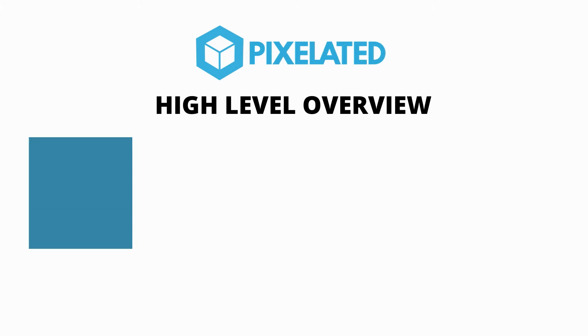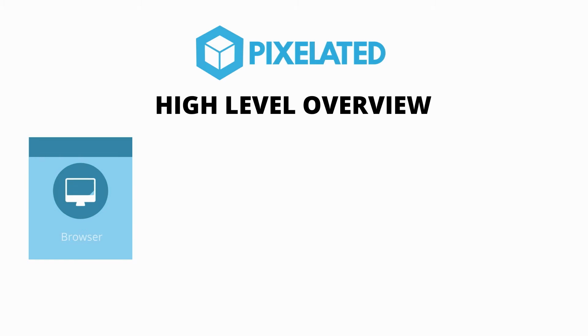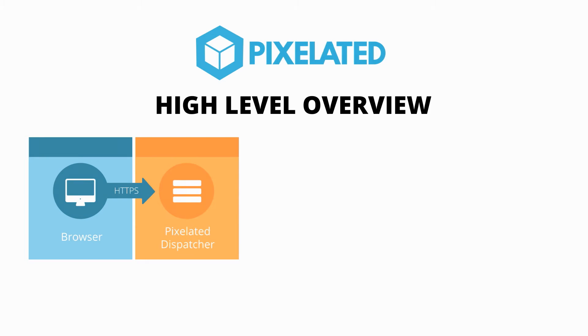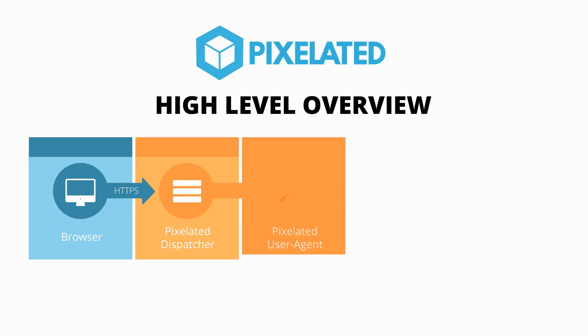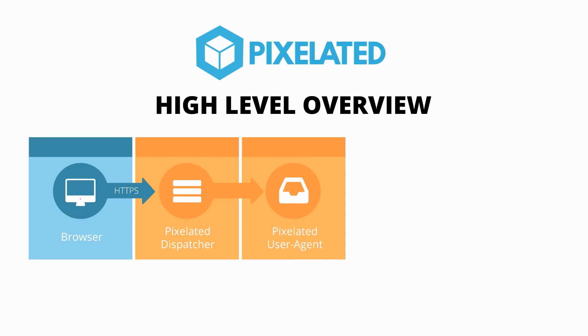Pixelated is split into three components. The first component is the dispatcher. End user requests come to the dispatcher, which identifies who the user is and then forwards it to the mail user agent. The user agent, which is the web interface, is built in Python, JavaScript, and HTML. The email is then forwarded to an email platform, and here we are literally standing on the shoulders of giants.